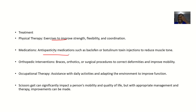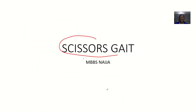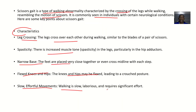Orthopedic intervention can involve braces, orthotics, or surgical procedures to correct deformities and improve mobility. Occupational therapy assists the person with daily activities and adapts the environment to improve function. This type of gait can significantly impact a person's mobility and quality of life, so you do all you can to help them. And that's scissors gait.